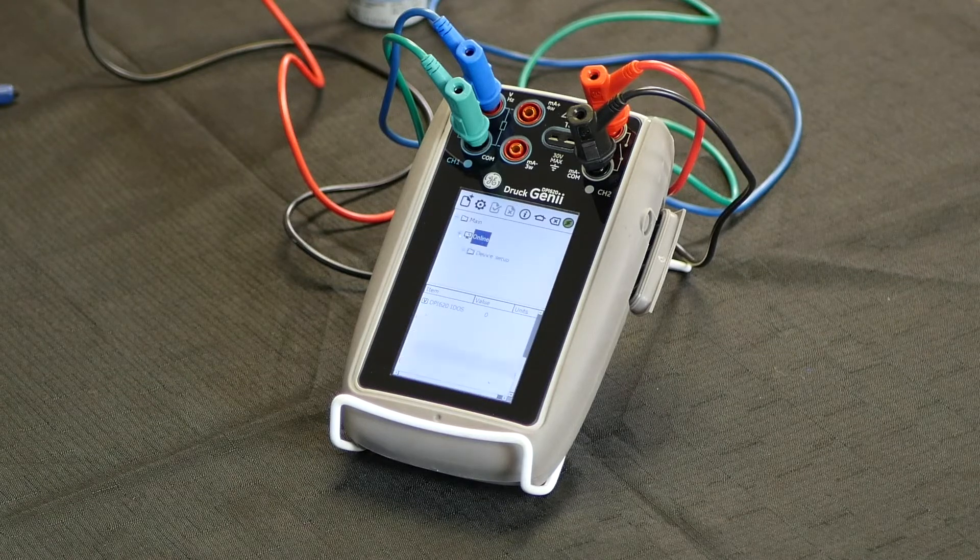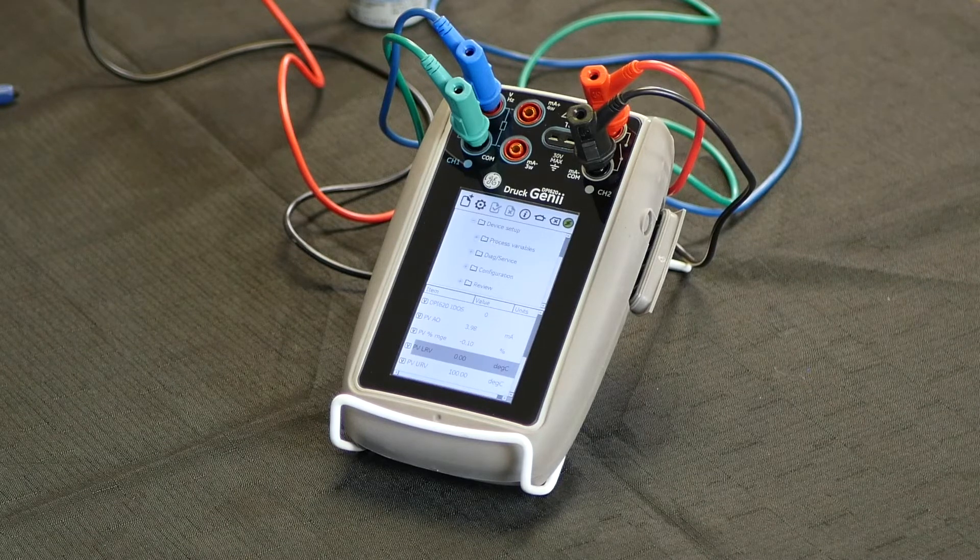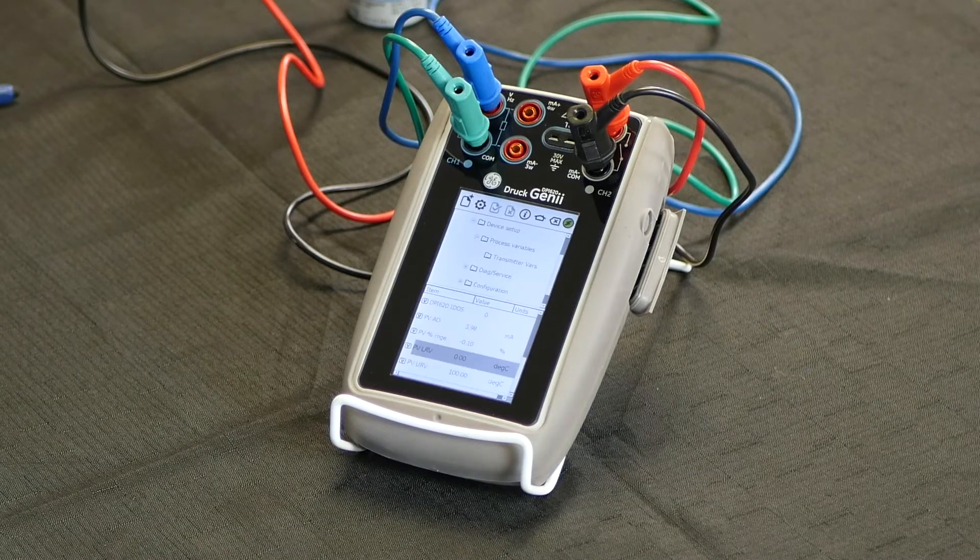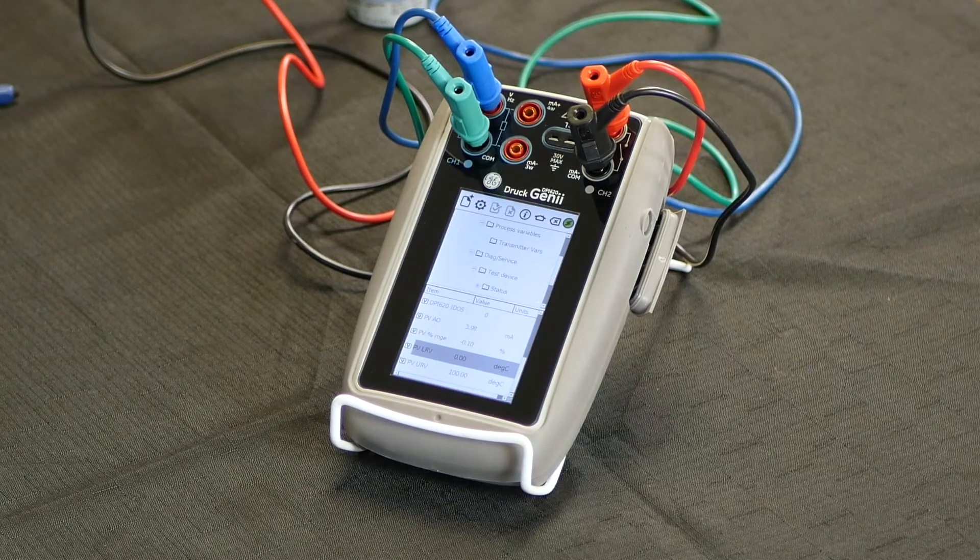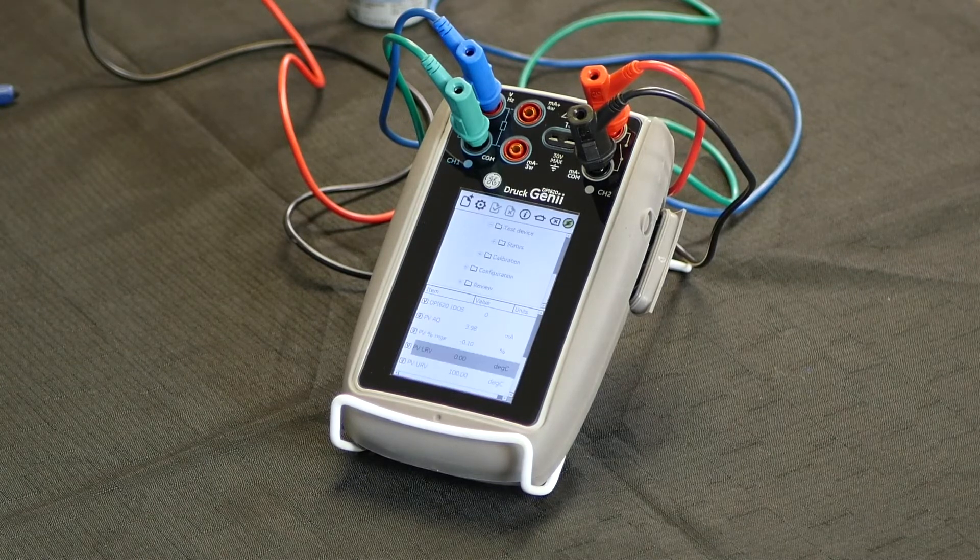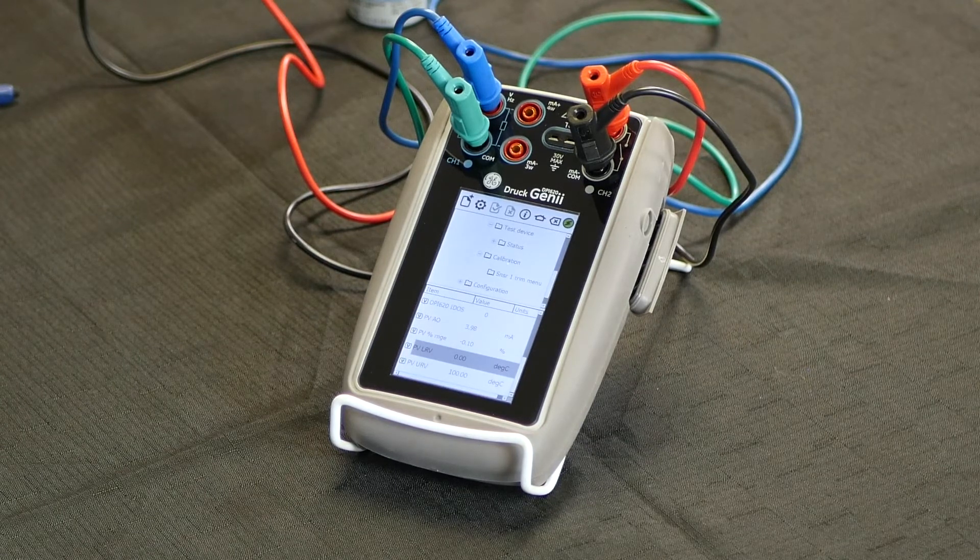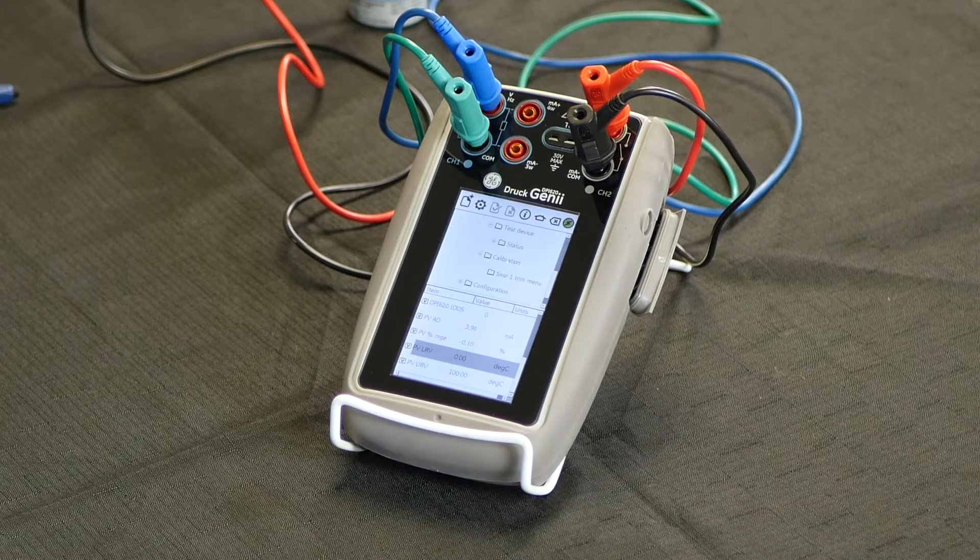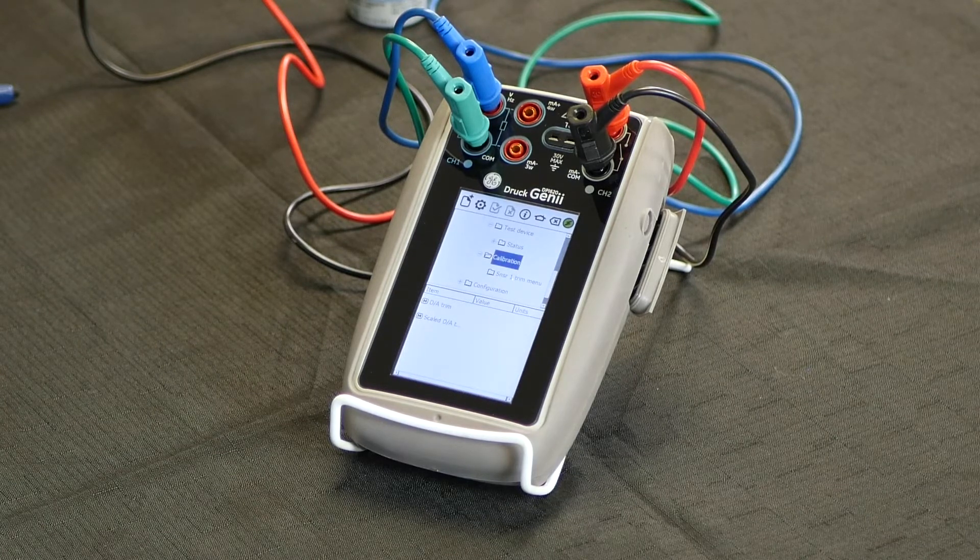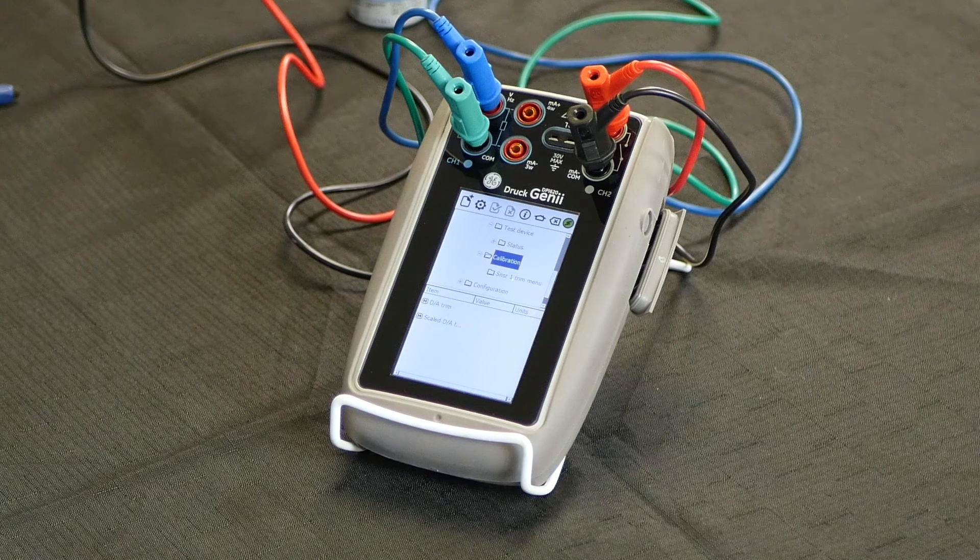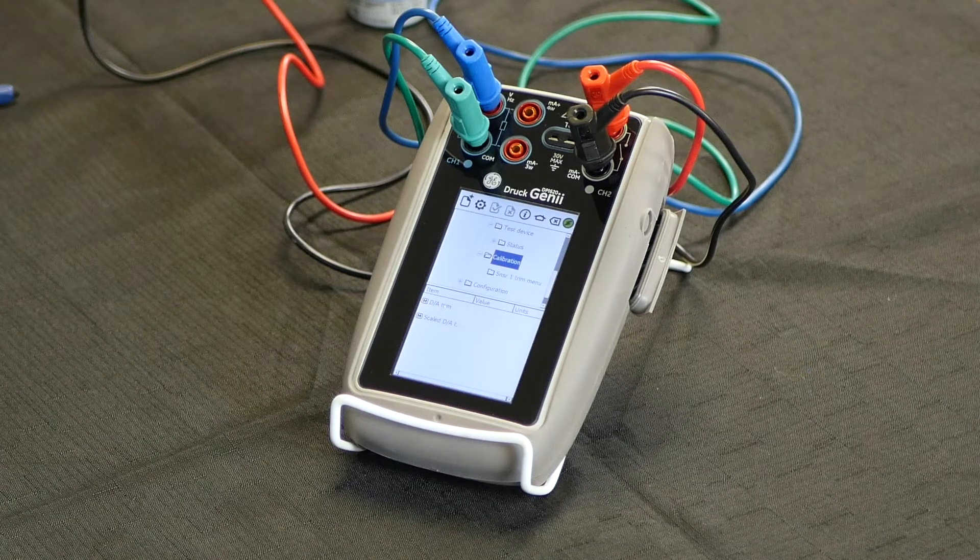To expand the menu tree to show you that it truly is a fully functioning HART communicator, you can see the multiple levels of the menu tree available. To show you one of the more commonly used features and functionality of a HART communicator, we'll go into the calibration mode and you'll see that you have the ability there to perform a sensor trim method and or a digital to analog trim method.